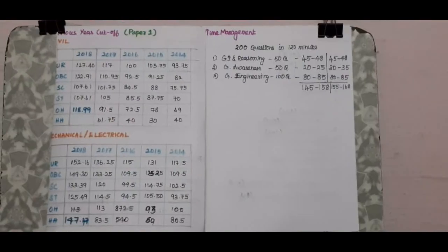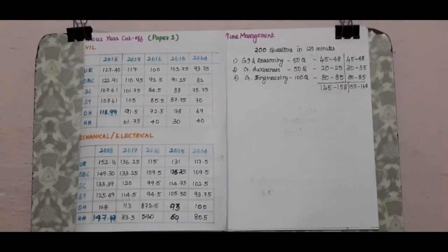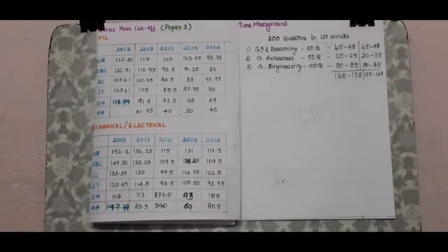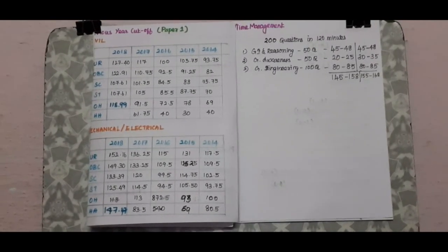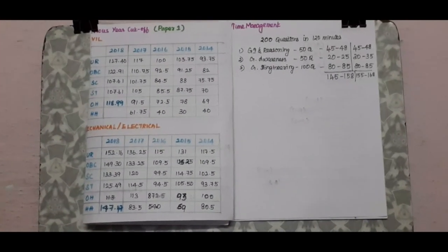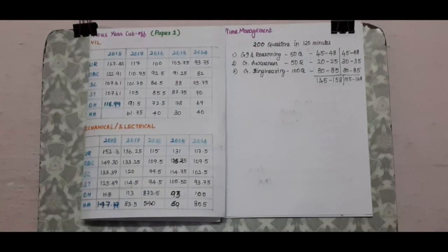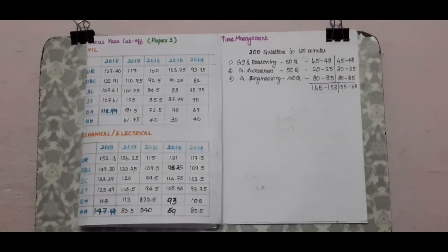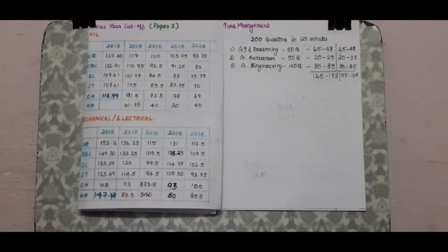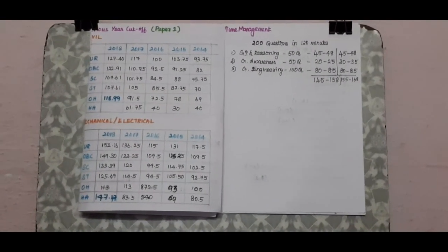Paper 1 is 200 questions. In general reasoning, you should aim to attempt 20 to 25 questions within the time. For general awareness, out of 50 questions you should aim to attempt 45 to 48.